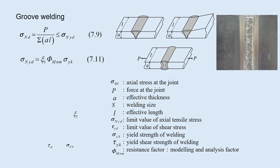When the fillet welding is subjected to shear force, it is judged not to exceed limit state 1 when equation 7.10 is satisfied. The effective thickness A is the leg length, which is the diagonal length of welding size S.